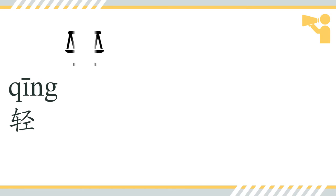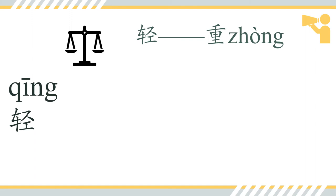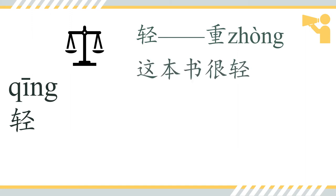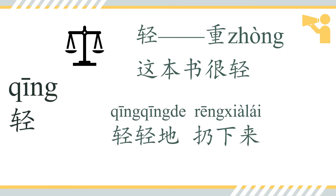轻 means 'light', not heavy. The antonym is 重, meaning 'heavy'. So 这本书很轻 — this book is quite light. And in the song we have 轻轻地扔下来.